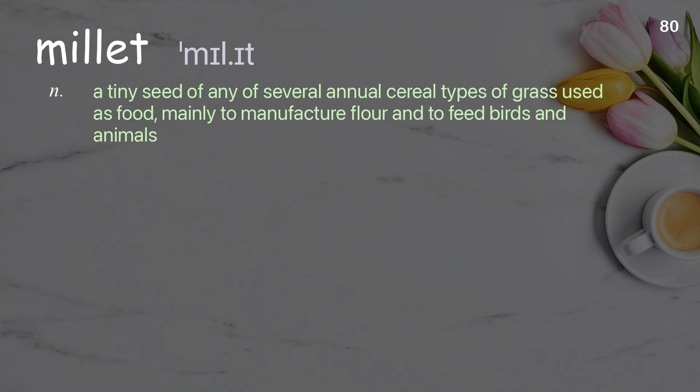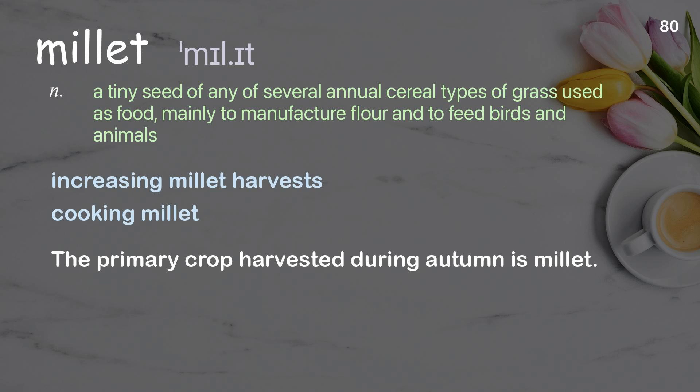Millet. A tiny seed of any of several annual cereal types of grass used as food, mainly to manufacture flour and to feed birds and animals. Examples: increasing millet harvests; cooking millet. The primary crop harvested during autumn is millet.